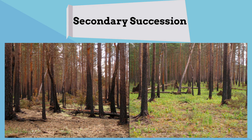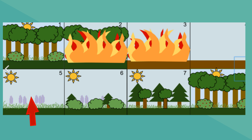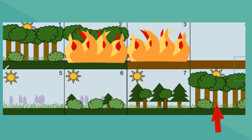Here is how secondary succession may occur. Fire destroys plant growth, leaving behind empty but not destroyed soil. Grasses and other plants grow back first. Small bushes and trees begin to colonize the area. Next, fast-growing evergreen trees develop to their fullest, while shade-tolerant trees develop underneath. Eventually, larger deciduous trees will grow over them and the ecosystem is similar but different from where it began.